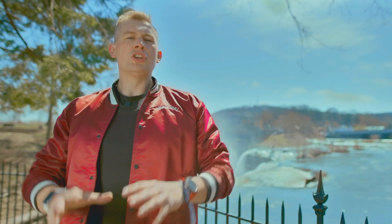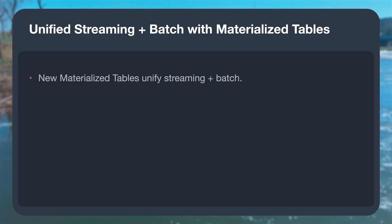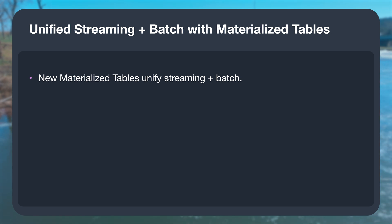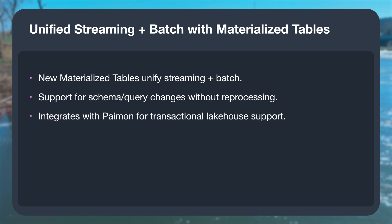This is super impressive for a new architecture using remote state, and this is just the beginning — more operators are being optimized to use asynchronous state, so performance will keep improving. Next up: materialized tables. This is Flink's way of letting you treat streams and batch jobs the same. You can manage both with one table abstraction. If you need to add more columns or change the query, you don't need to reprocess everything. This is a production-ready feature and integrates with tools like Apache Paimon for real-time data lakehouse use cases.